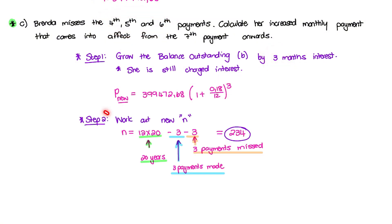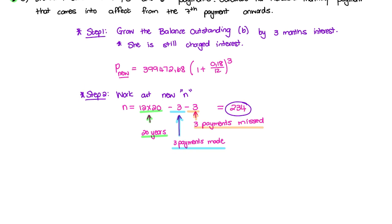The second step is we need to work out a new n. So after I've missed these three payments, how many payments do I still need to make? So we had a loan of 20 years, and that was 12 times 20. Then we have made three payments. So that's the first three payments that we have made. And then we are missing three payments. So in total, when we retake the loan or start repaying in month seven, we still need to make 234 repayments or payments.